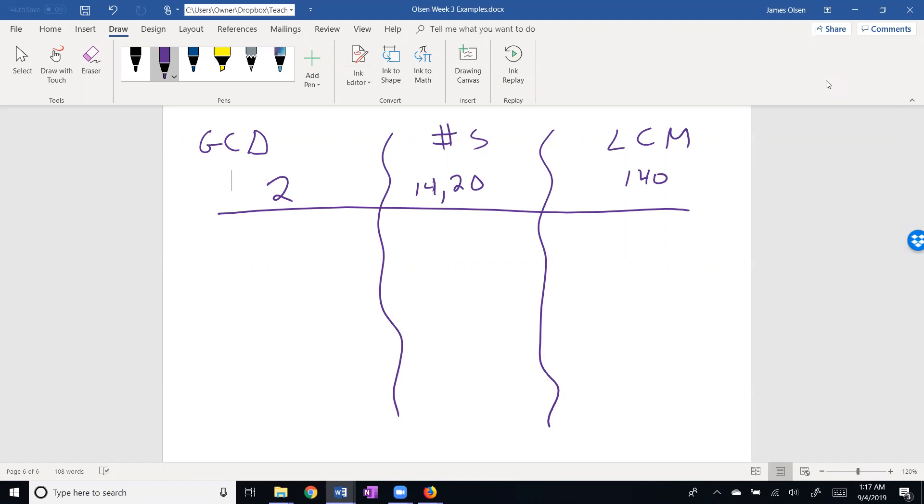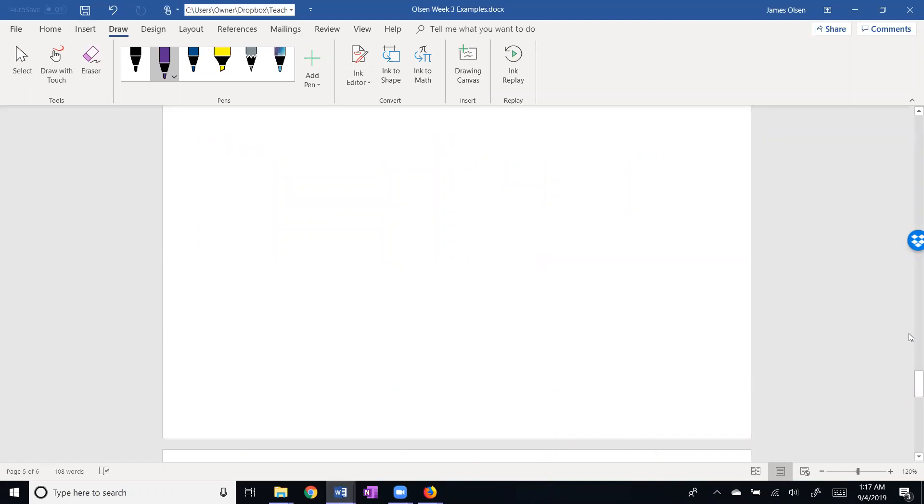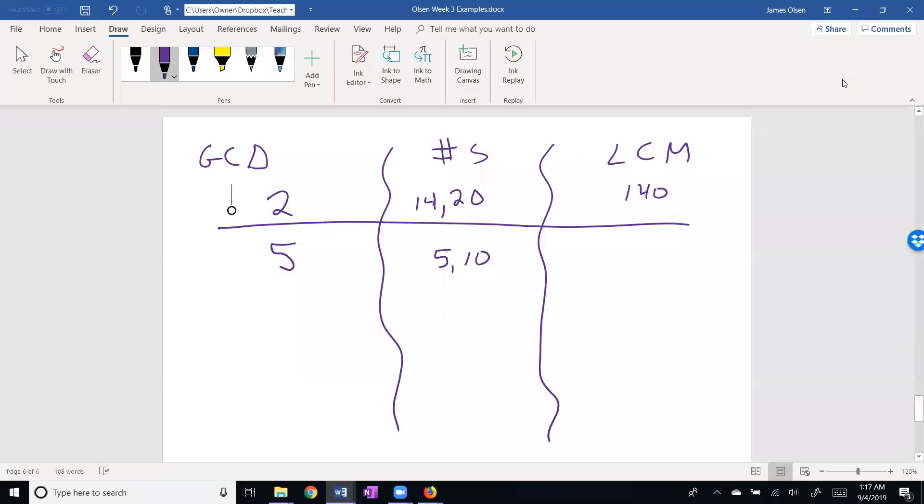Let's say we have, for example, 5 and 10. It is possible for the GCD to be one of the numbers, but notice that it's smaller than both numbers. It's possible for the LCM to be equal to one of the numbers. The LCM here is 10, but it is still going to be larger. Trivial example: if the numbers are the same, the greatest common divisor is the same, and the least common multiple is the same.